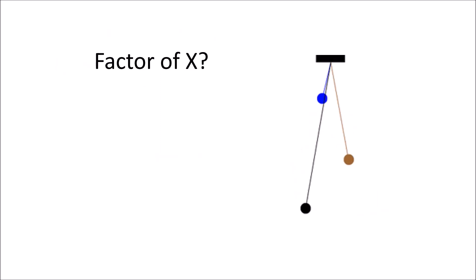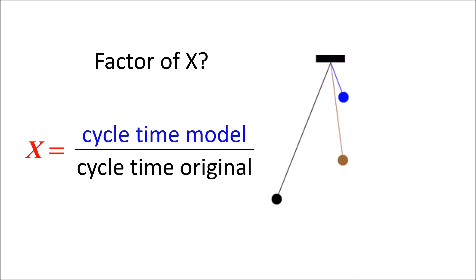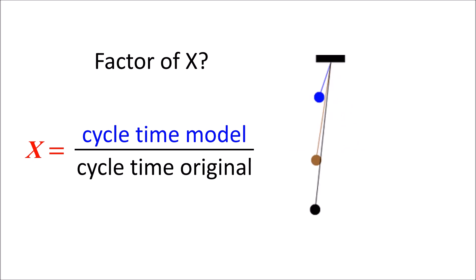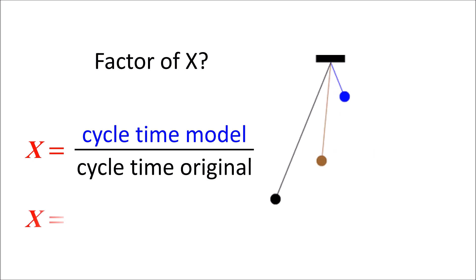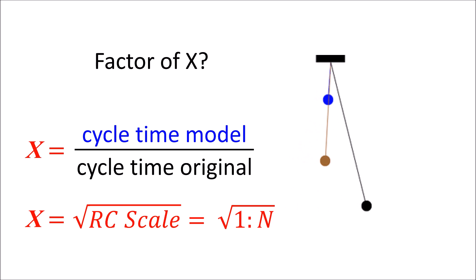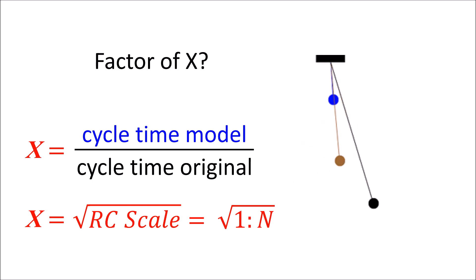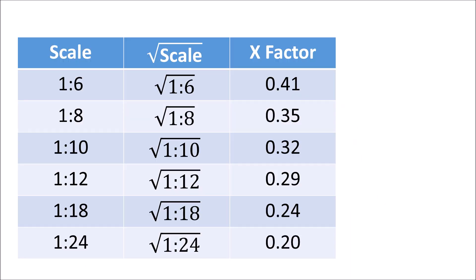Therefore the movie of the miniaturized model must get x times slower than the one of the real-sized original. Consequently, the factor x can be computed by the ratio of the cycle times of the model and the original. With some physics and math shown later, we can obtain the factor x by computing the square root of the scale of the RC model.